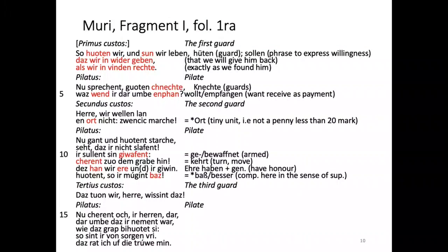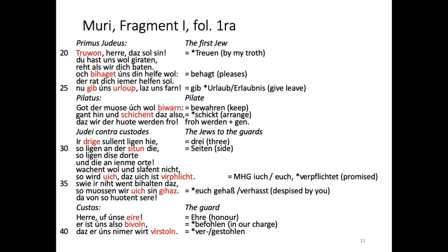Reading of the Middle High German text - the negotiation between Jews, guards, and Pilate: 'So hurten wir und sollen wir leben, dass wir ihn wiedergeben, als wir ihn finden. Wir sprechen kurzen Kräfte. Was werdet ihr darum empfangen? Herre, wir wählen Lohn in Ordnicht - zwanzig Marken. Du gant und hoffnestache. Seht, dass ihr nicht schlafen. Ihr sollt ihn gewaffnet. Der Herr soll dem Grabe hin. Das haben wir Ehre und ihr gewinnen.' Pilate then addresses the crowd, wishing them good night and to return tomorrow healthy: 'Gott, der gibt euch gute Macht - wieder heim - und komm mit morgen wohl gesund.'